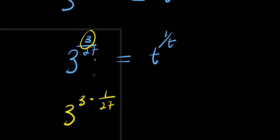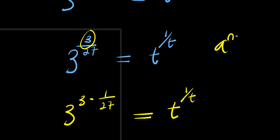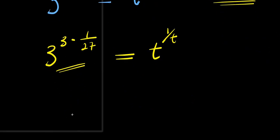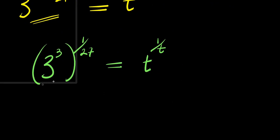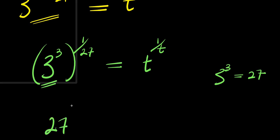Now let's consider this other identity: if you have a to the power of n times n, this equals a to the power of n, raised to the power of n. By applying this identity right here, what I'm going to have will be 3 to the power of 3, raised to the power of 1 over 27, and this equals t to the power of 1 over t. So we need to find the value of 3 to the power of 3, and it's obvious that 3 to the power of 3 is 27 — that is 3 times 3 times 3. So what I'm having here is just 27 to the power of 1 over 27, and this equals t to the power of 1 over t.